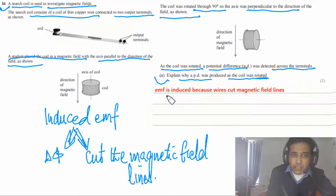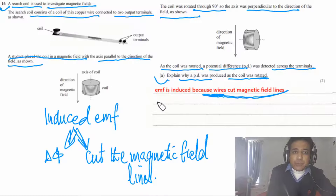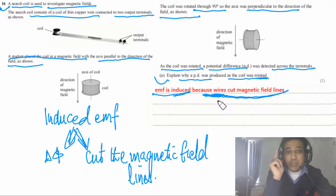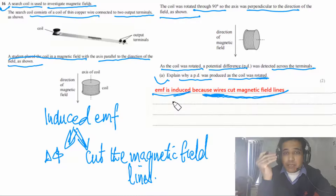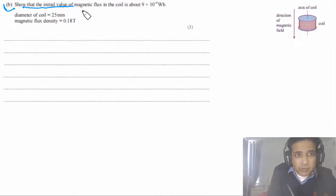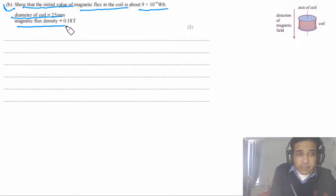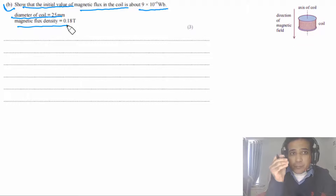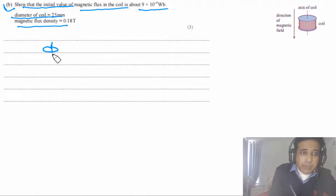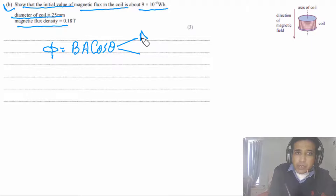Part b: show that the initial magnetic flux in the coil is about 9 × 10⁻⁵ Wb. Diameter of coil and magnetic flux density B are given. Magnetic flux Φ = BA cos θ. Initially, the axis is parallel to the field, so θ = 0 and cos 0 = 1. Therefore Φ = BA.